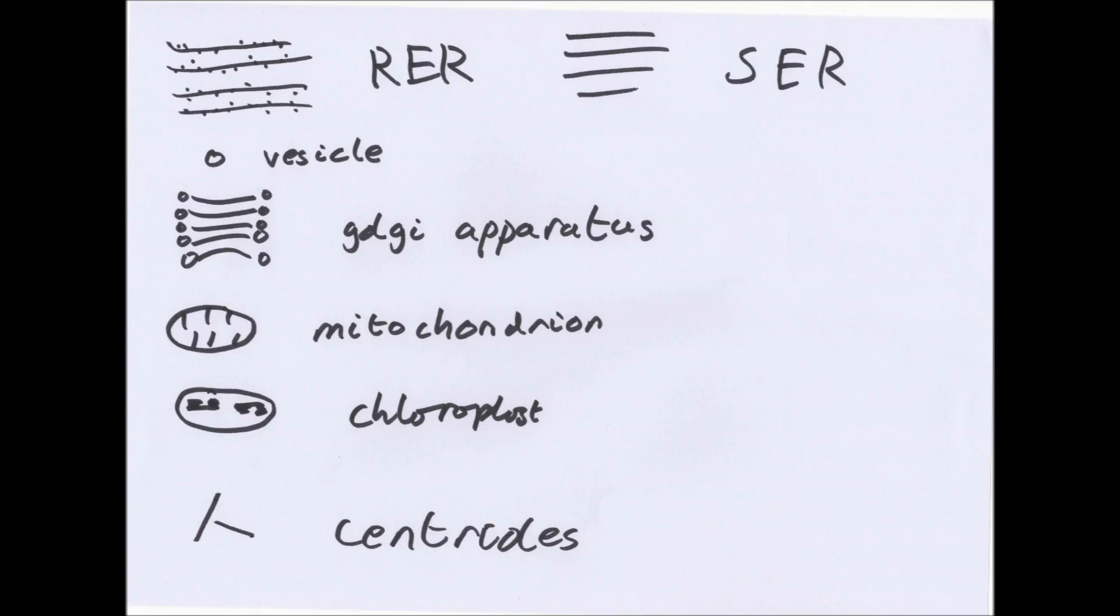A centriole. Now these are at 90 degree angles to each other. These are involved in the separation of chromosomes and cell division, which we'll look at later.